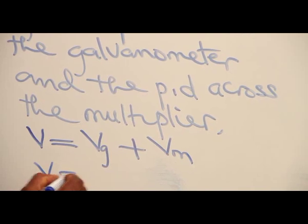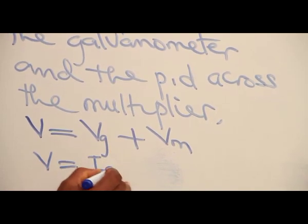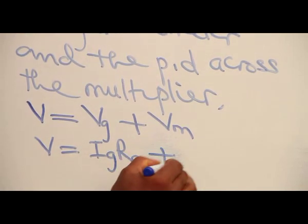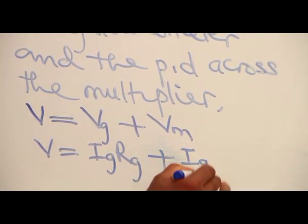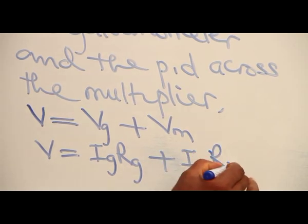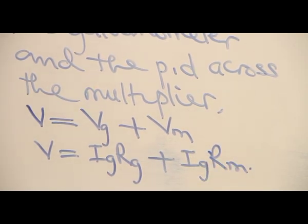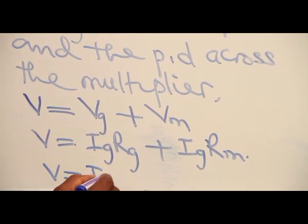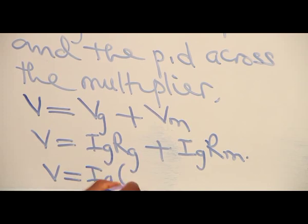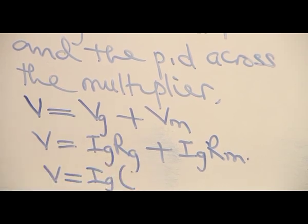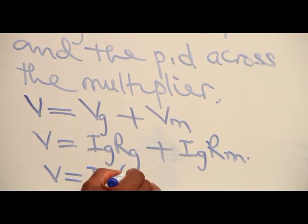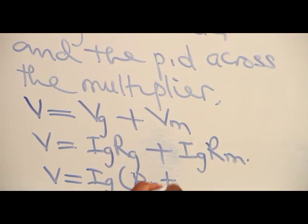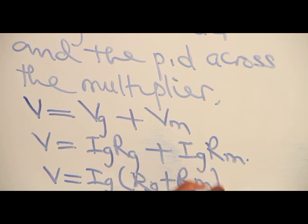Applying Ohm's law, I have IG times the resistance of the galvanometer plus the same current which flows to the multiplier times the resistance of the multiplier. This could be written as IG, the current of the galvanometer at maximum or full-scale deflection, times the resistance of the galvanometer plus resistance of the multiplier.